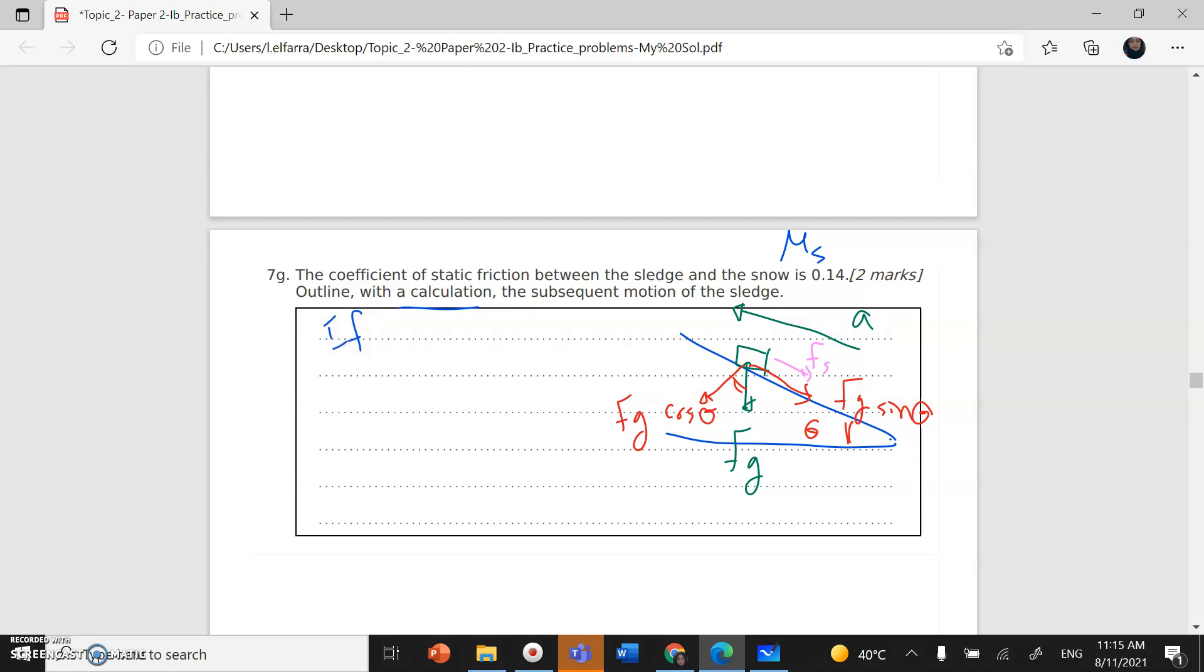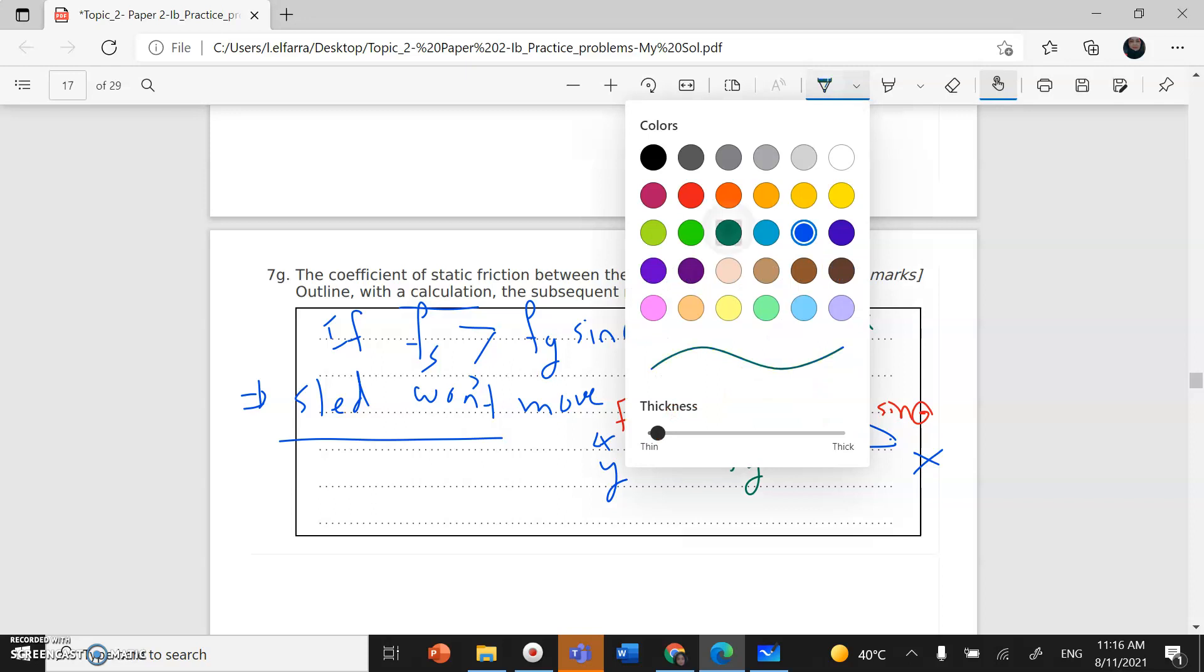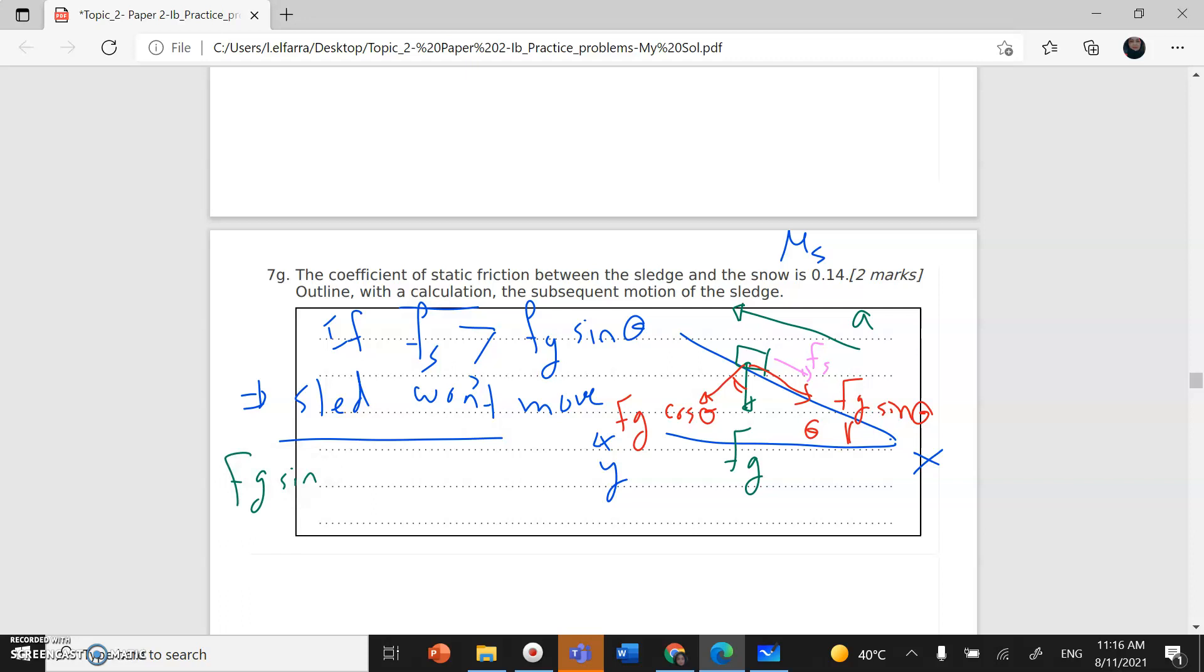Here I have the sledge moving upward with acceleration A. I have the weight FG, which I can break down into components parallel to the surface, FG sine theta, and perpendicular to the surface, FG cosine theta. Opposite to the direction of motion, I have the static friction. If the static friction is greater than FG sine theta, that means the sledge won't move. Let's calculate the component FG sine theta: FG equals mass 5.5 times 10, so 55 sine 6.5, which gives 6.2 Newton.